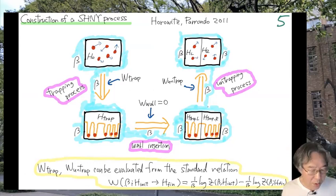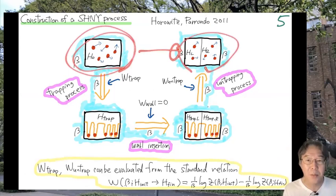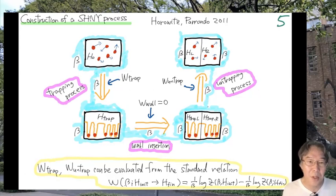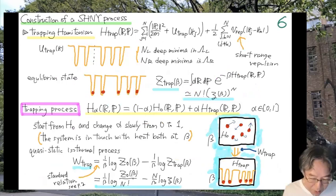In the remaining part of this webinar, I'd like to discuss a concrete example of an SHNY process. This is actually different from the example considered in the original paper, and this process was discussed back in 2011 by Jordan Horowitz and Juan Parrondo in the context of Maxwell's demon. This is just a rough sketch: you want to go from an initial state to a final state, but instead of going directly, you go through three steps — a trapping process, wall insertion, and an untrapping process.